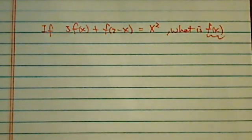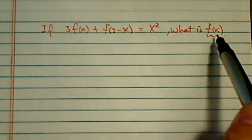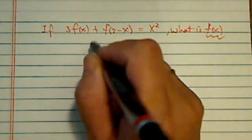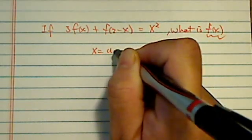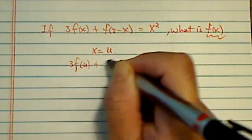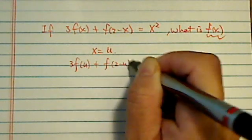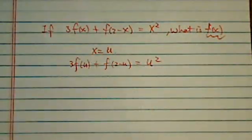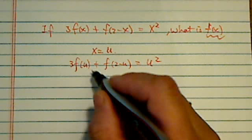At first glance, this looks bewildering until we recognize this. Let's call x equal to u. Then we have 3f(u) + f(2-u) = u². Nothing extraordinary there.